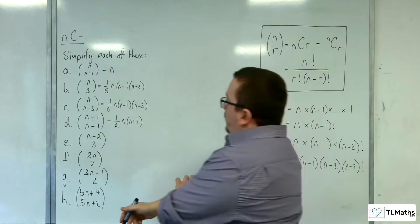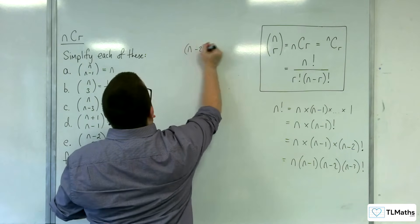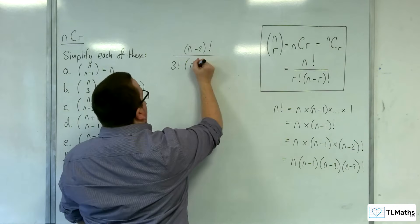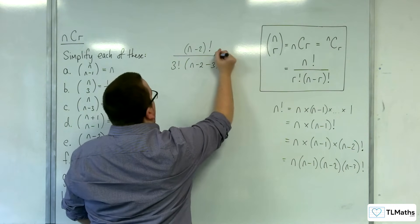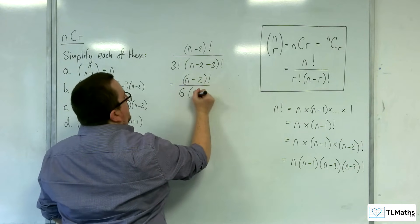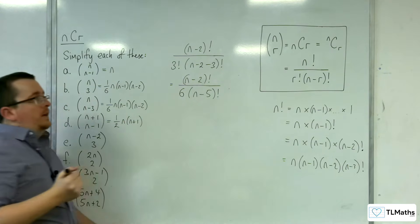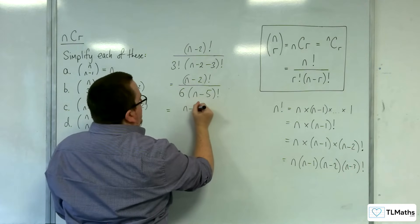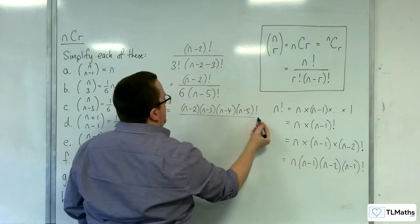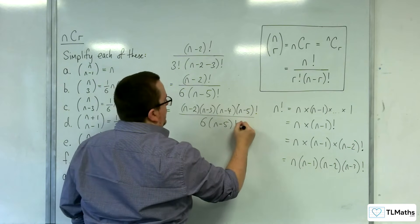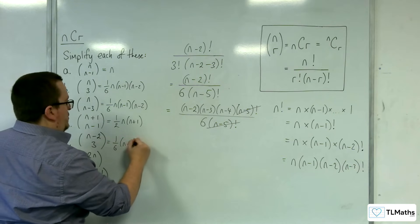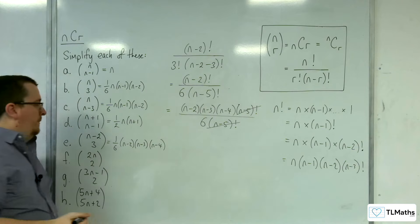Part E: N-2 choose 3. N is replaced with N-2, and R is replaced with 3. So N take away R becomes N-2 take away 3, which is N-5. We get N-2 factorial over 6 times N-5 factorial. Expanding: N-2 times N-3 times N-4 times N-5 factorial over 6 lots of N-5 factorial. The N-5 factorials cancel, leaving one sixth of (N-2)(N-3)(N-4).